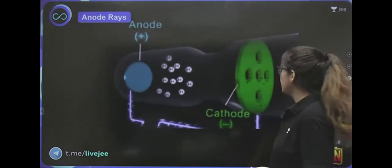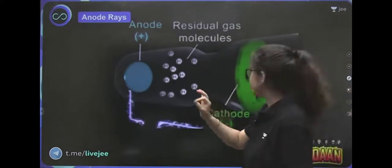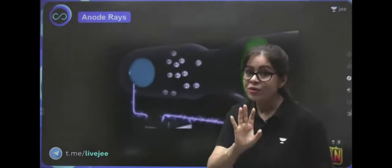Now there is a potential of several thousand volts. When they apply this voltage, what will happen? The electrons start from the cathode. That is what they call cathode rays.